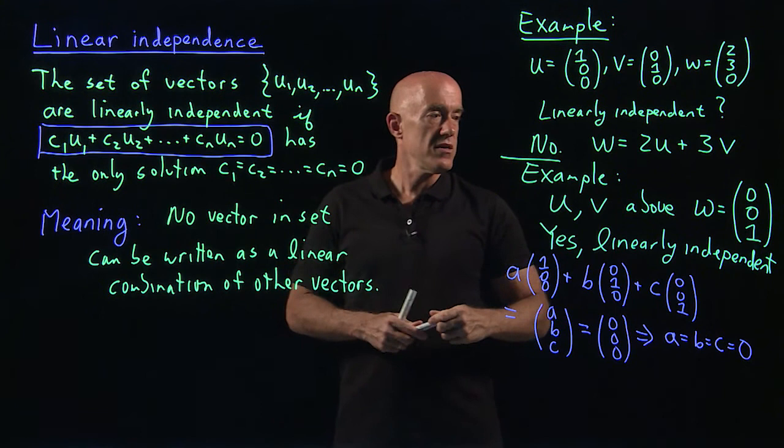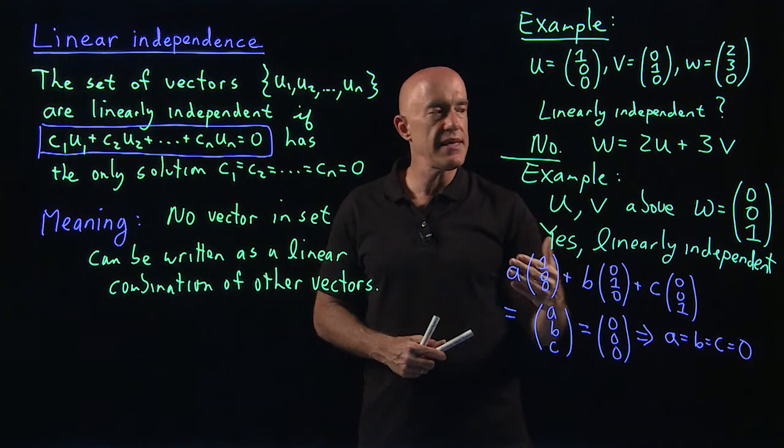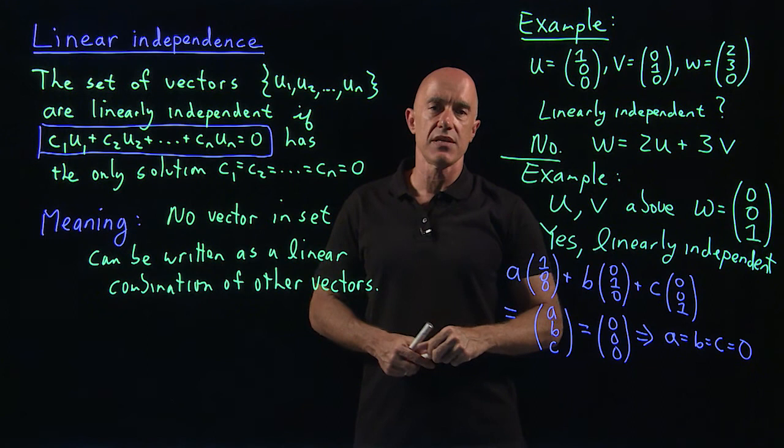So, the key here in this second example where we have (1, 0, 0), (0, 1, 0), and (0, 0, 1) as our three vectors. The key is that you cannot write any of these vectors in terms of a linear combination of the other vectors.